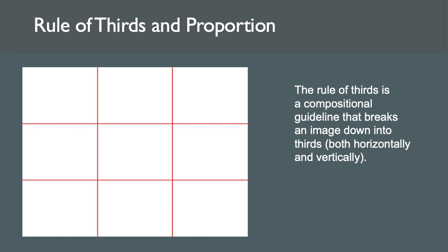The rule of thirds is a compositional guideline that breaks an image down into thirds both horizontally and vertically. Proportion refers to the size relationship of visual elements to each other and to the whole picture. One of the reasons proportion is often considered important in photography is that viewers respond to it emotionally. Proportion in art has been examined for thousands of years, long before photography was invented. One proportion often cited in design is the golden mean or golden ratio, which originated in Greek culture.